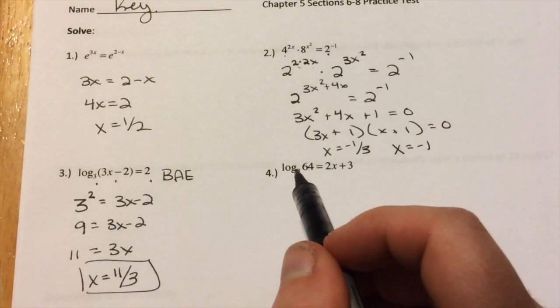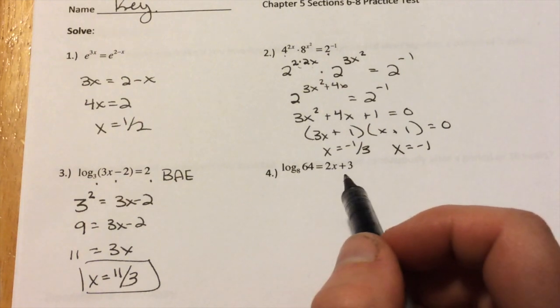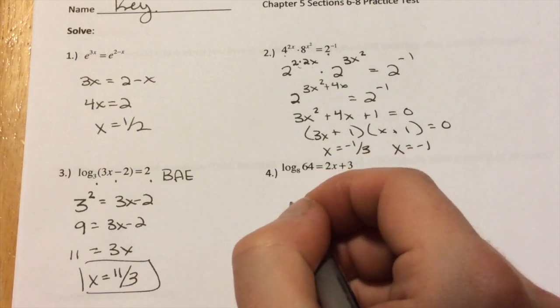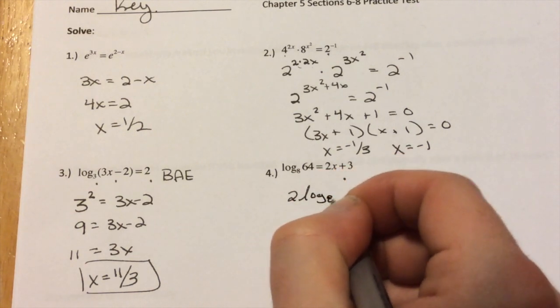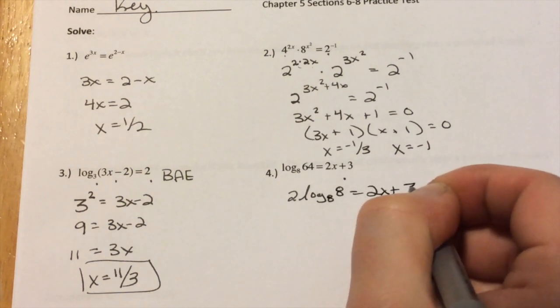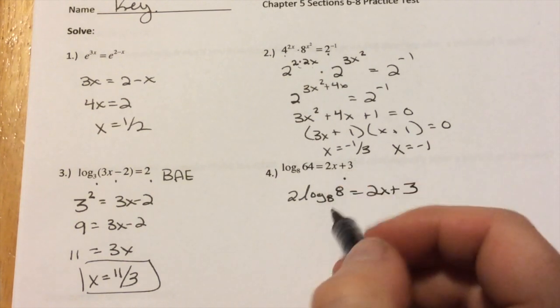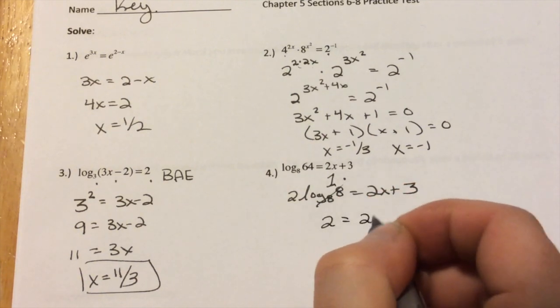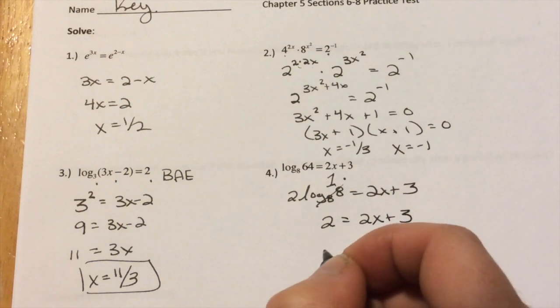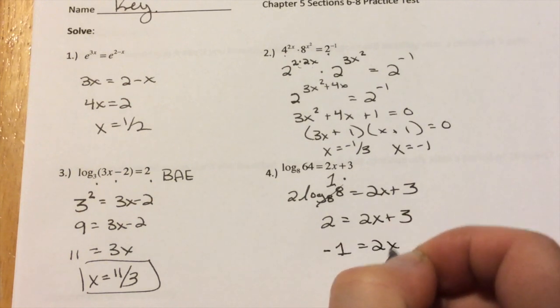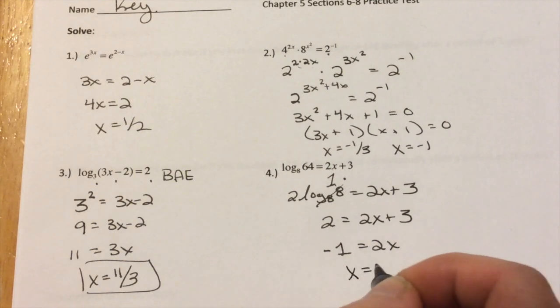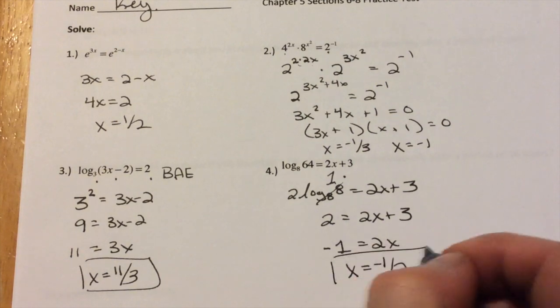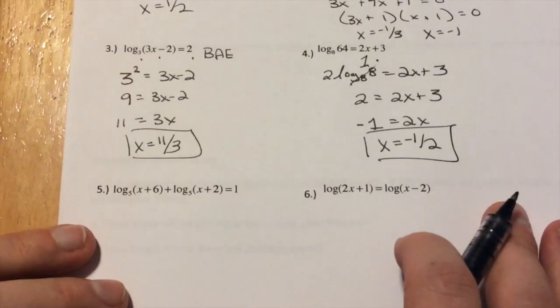Here, we have another one. We have log base 8 of 64 equals 2x plus 3. We can also, because we're really smart at this, we can also see that this is 2 log base 8 of 8 equals 2x plus 3. And we know log base 8 of 8, that's just 1. So really, we have 2 equals 2x plus 3. Subtract 3, we get negative 1 equals 2x. Divide by 2, we get x equals negative 1 half. So, so far, nothing too challenging.